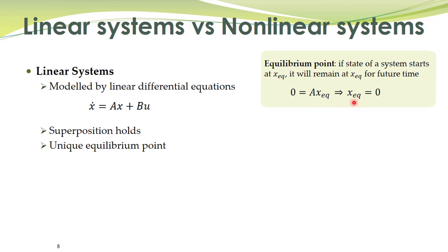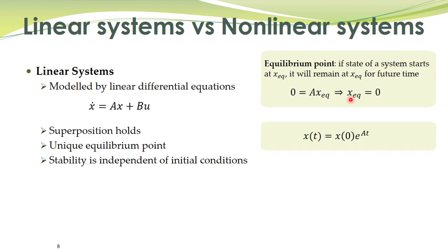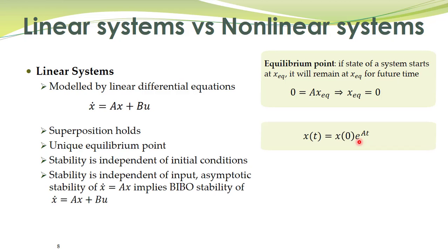For this particular state equation with input equal to zero, you always get a unique equilibrium point. There is one exception: you may have multiple equilibrium points, but in that case all those equilibrium points will be non-isolated. Furthermore, for linear systems, stability is independent of initial conditions. If the system is stable it will stay stable for all initial conditions, as apparent from the solution — stability only depends upon the exponential term.